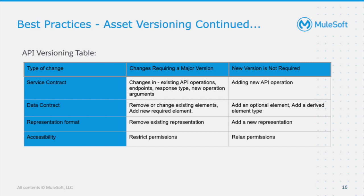If you are removing or modifying existing data types — for example, order ID or customer ID — you must change to a major version. If it is an optional or derived element, you don't need a major version change. In terms of representation, if you remove an existing form of how your API is presented, that is a major change; adding a new type of representation is not. For accessibility, if you are restricting permissions on an API the user is directly impacted, so that is a major change. Relaxing permissions is not a major change, as the user still has a working API.